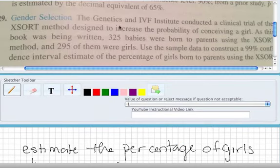So let's go ahead and take a look. It looks like when they were using XSORT, out of 325 babies, 295 of them were girls.